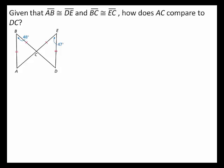Given that side AB is congruent to side DE and side BC is congruent to side EC, how does the length of side AC compare to the length of side DC?